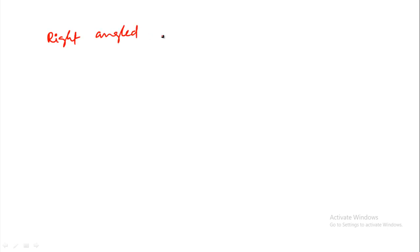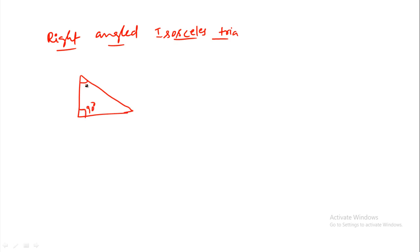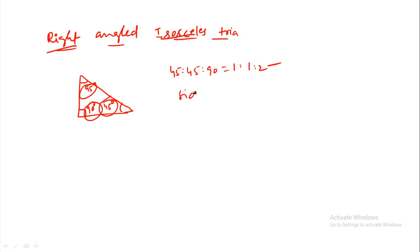A right-angled isosceles triangle has angles 45, 45, and 90 degrees. The two equal angles are 45 degrees each. The ratio of sides is 1 is to 1 is to root 2.